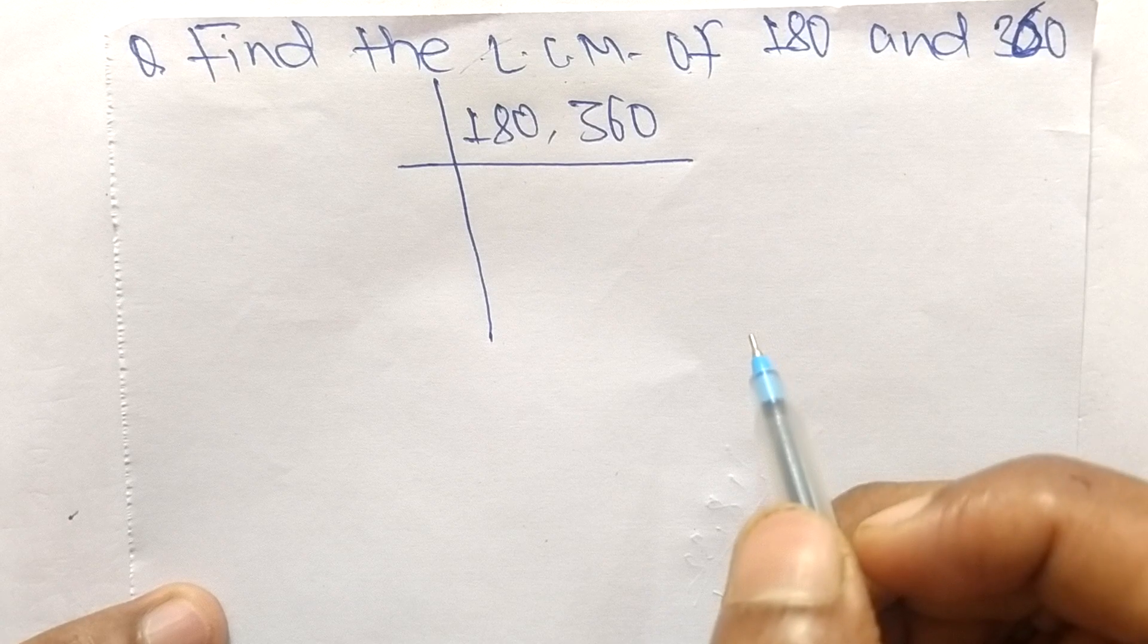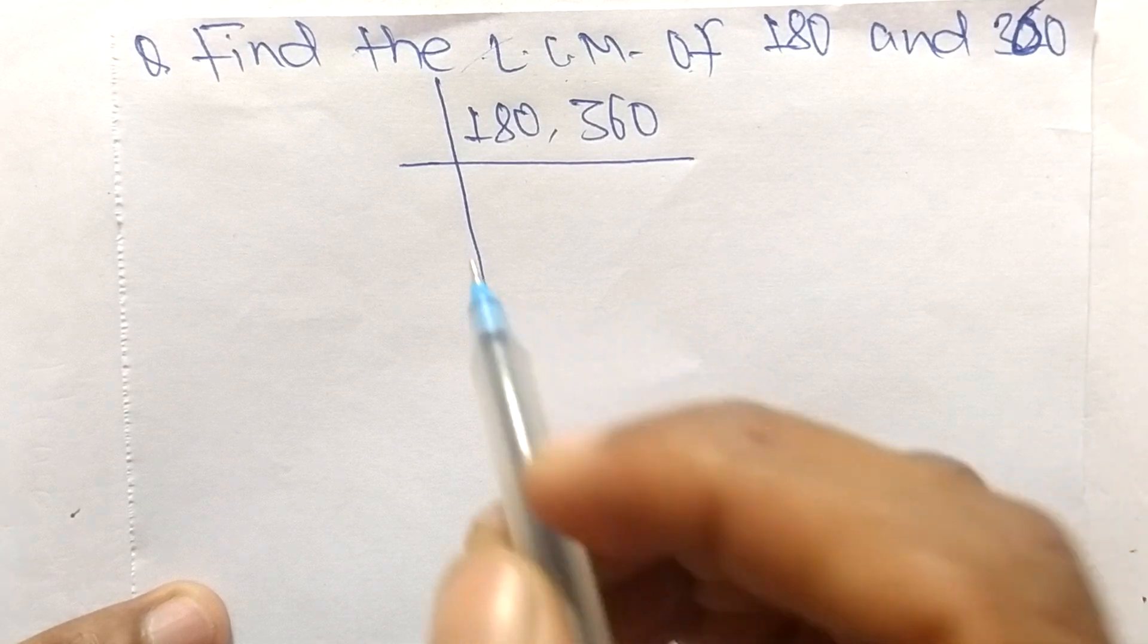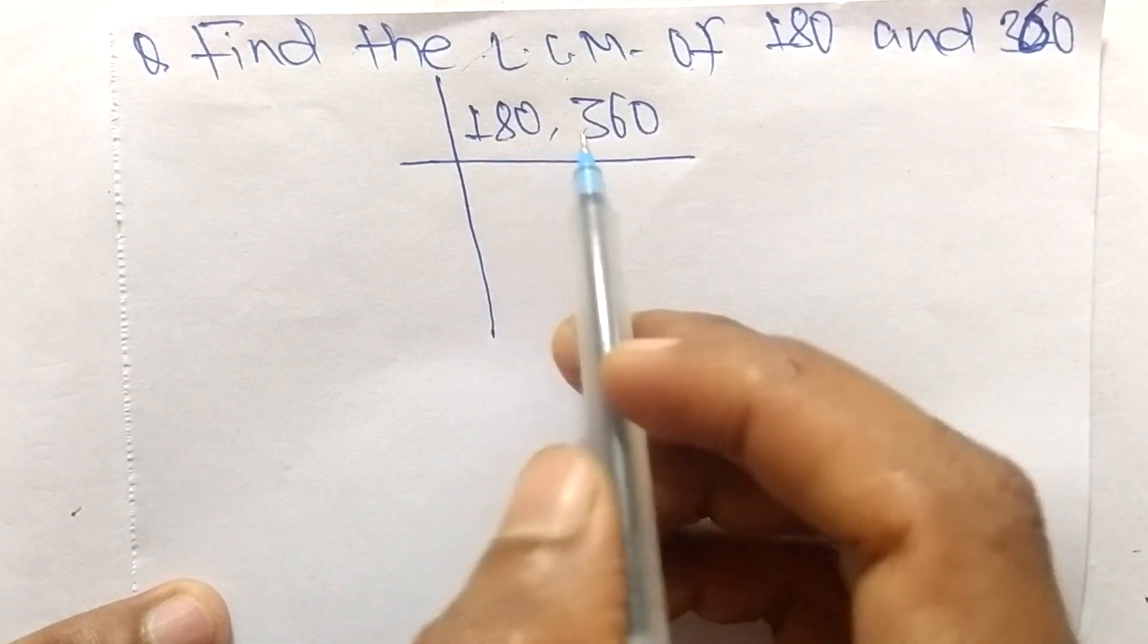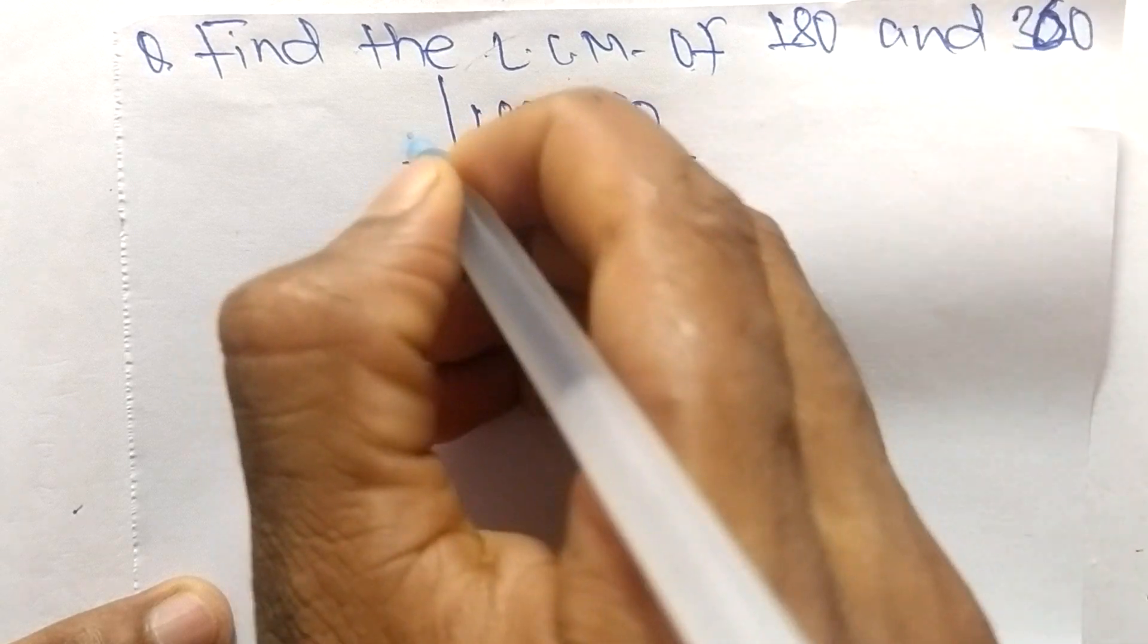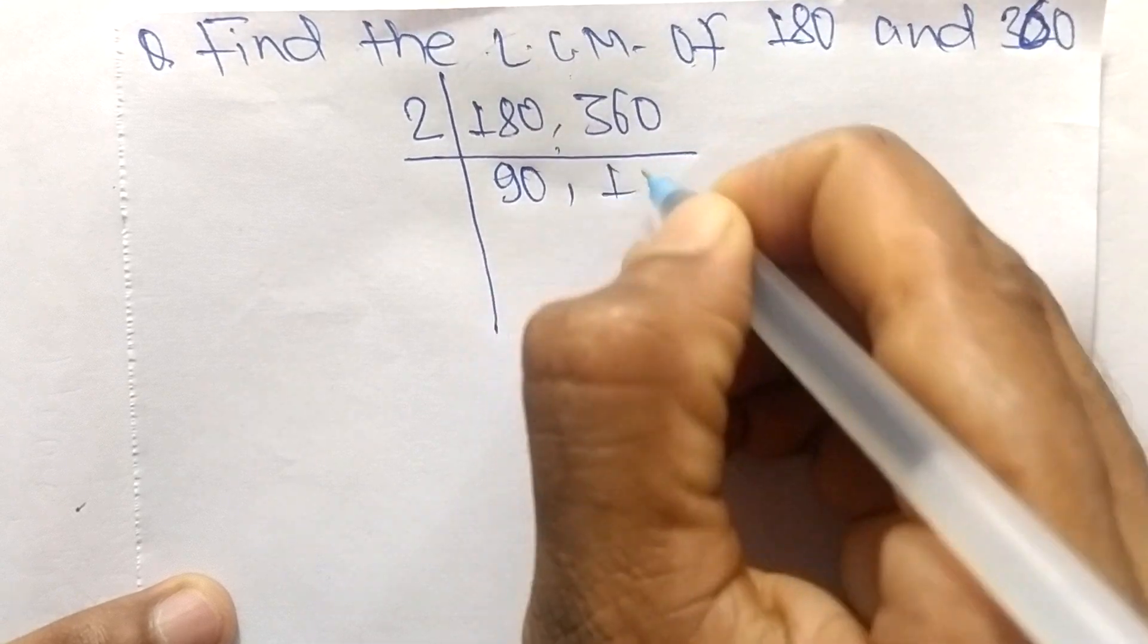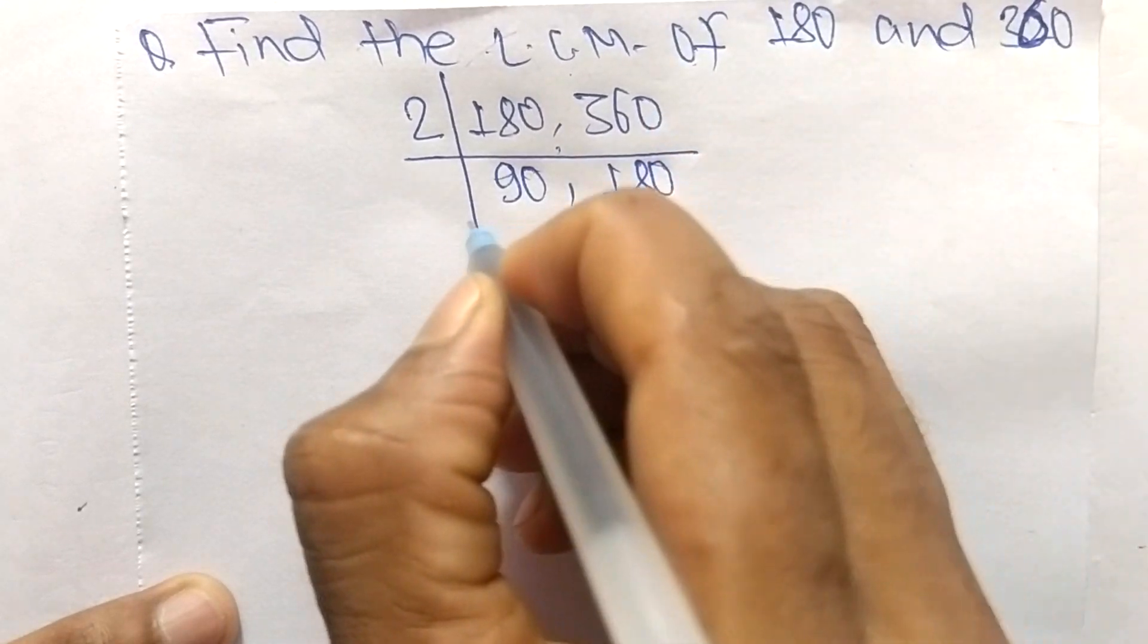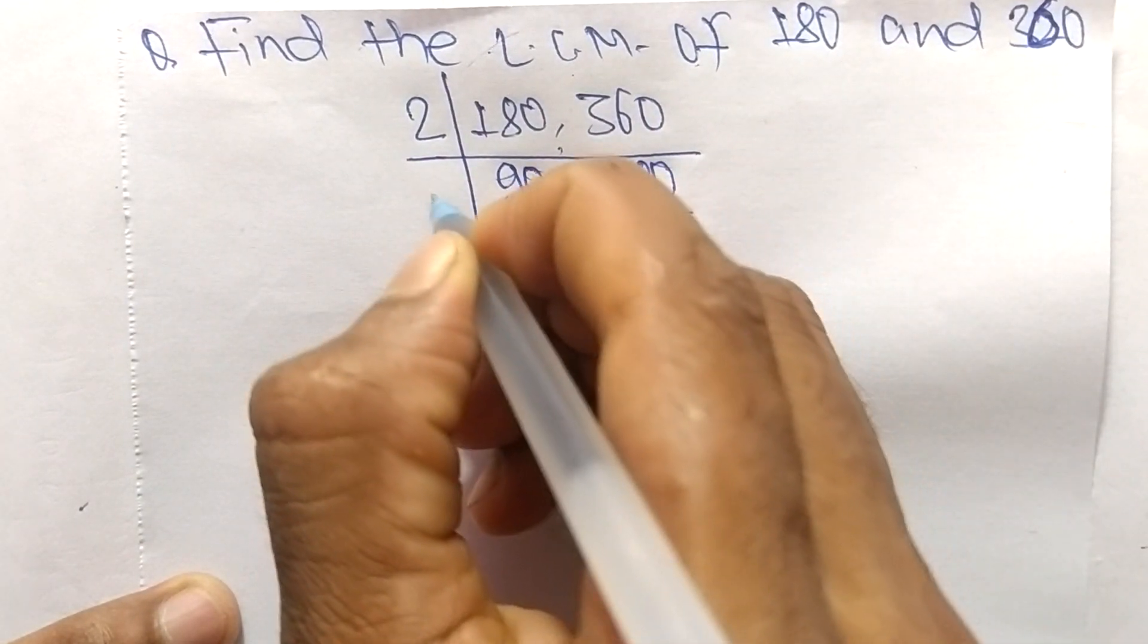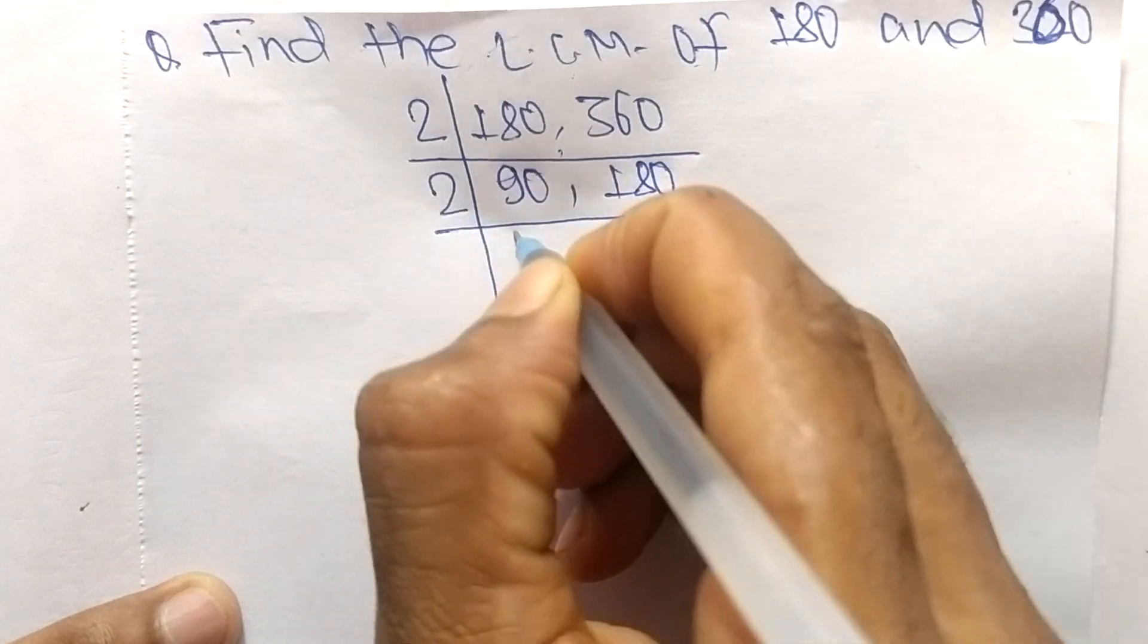So the number is 2. 2 times 90 means 180, 2 times 180 means 360. Again it is divisible by 2, so 2 times 45 means 90, 2 times 90 means 180.